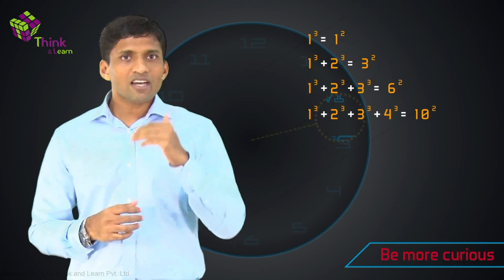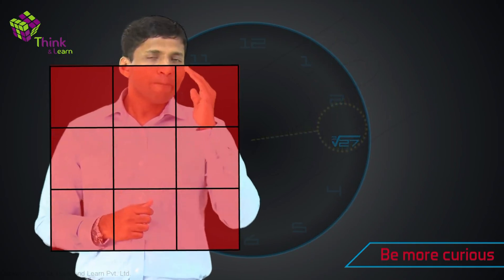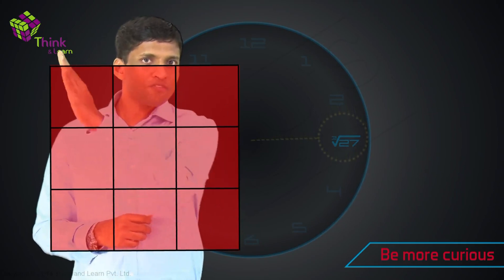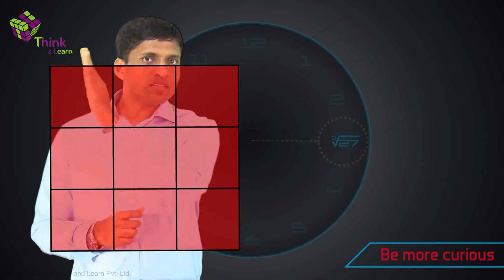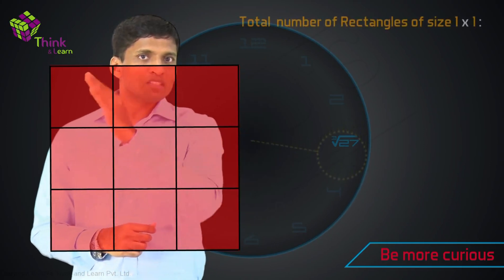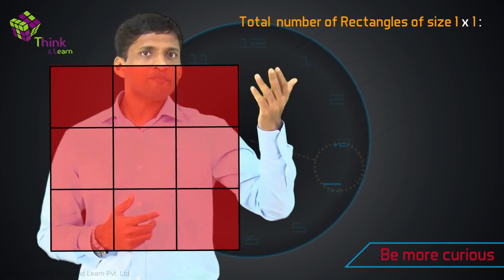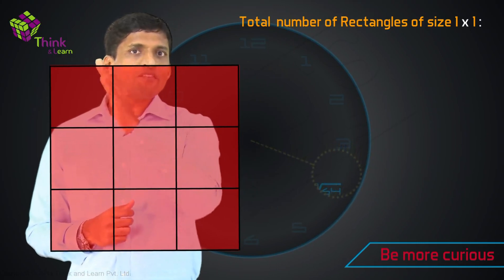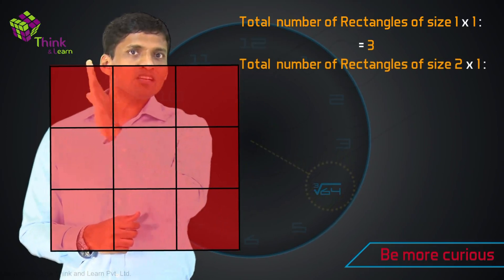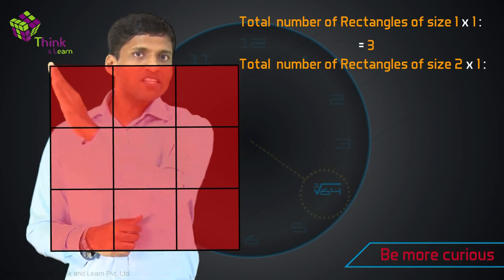Let's take a 3 by 3 grid. Along the top row, let's count the rectangles of size 1 by 1 — these get highlighted as I count. There are 1, 2, 3 of them. Now how many rectangles are there of size 2 by 1, where length is 2 and width is 1? Those are 1 and 2, so there are 2 of them.